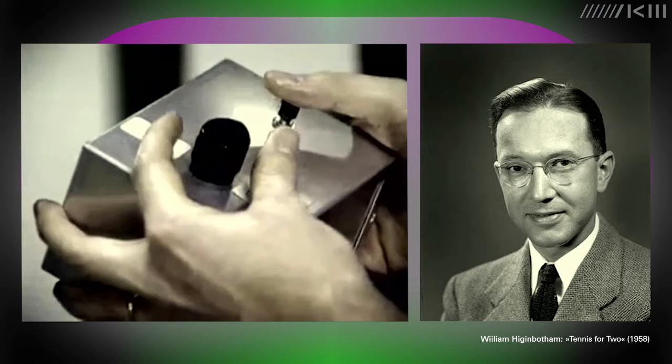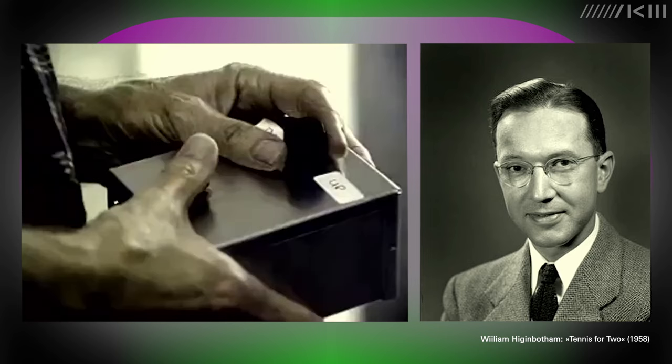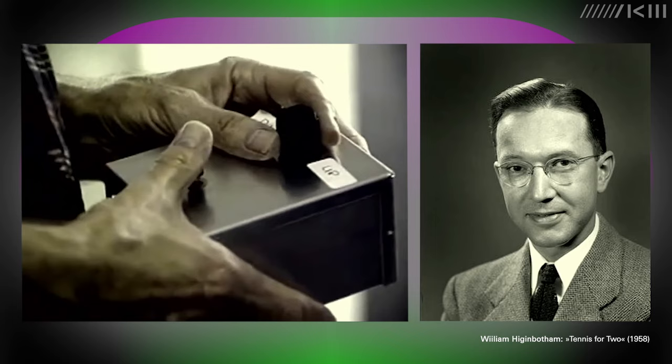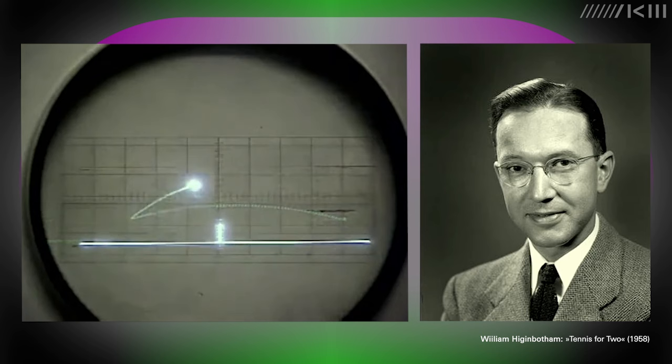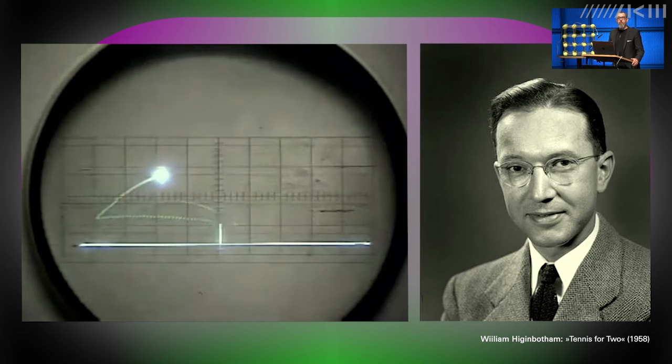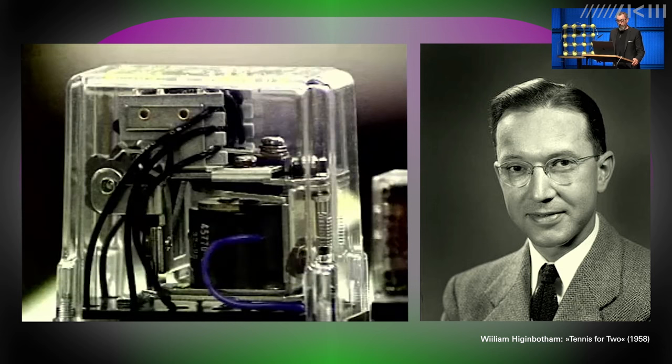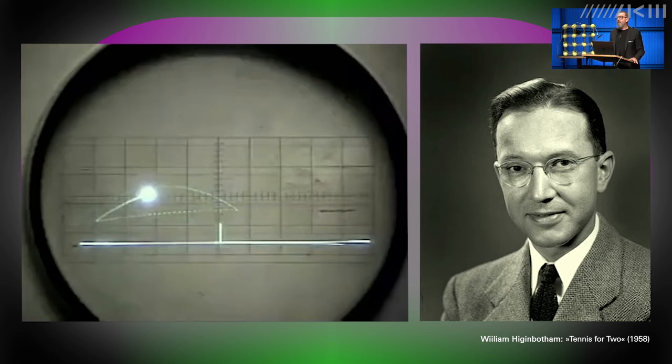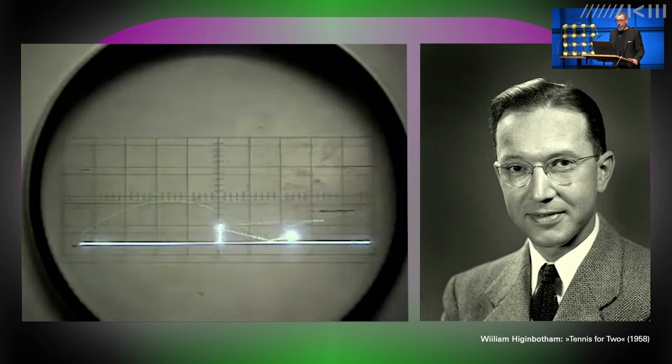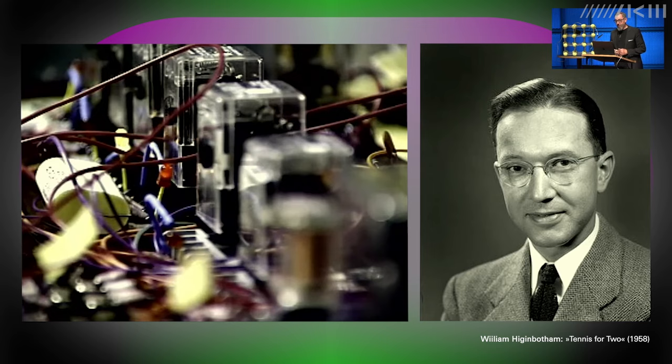The history of the computer game begins in a specific situation that interestingly resembles an exhibition. It all began with a misuse of an oscilloscope in 1958, when physicist William Higginbotham combined this electronic measuring device with an analog computer to create a tennis game called Tennis for Two. He developed the game, its interface, and the type of installation for the Brookhaven National Laboratories open house.